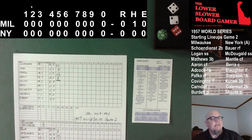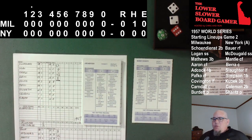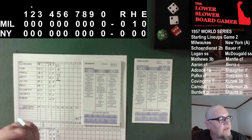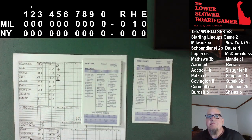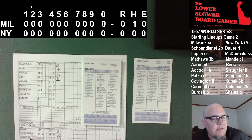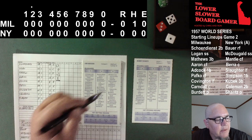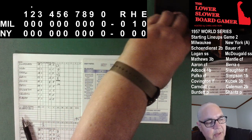Top of the second inning. Bobby Shantz getting his warmups with Yogi Berra. He'll face 5-6-7: Adcock, Pofko, and Wes Covington. Shantz is set, pitch to Joe Adcock — 3-6. And Adcock works a walk. Leadoff batter in the top of the second for the Braves is on base.